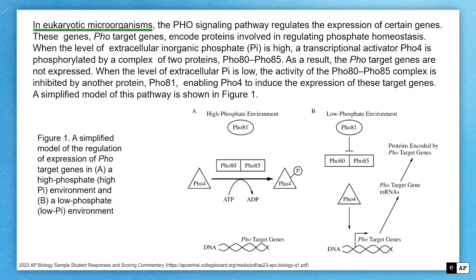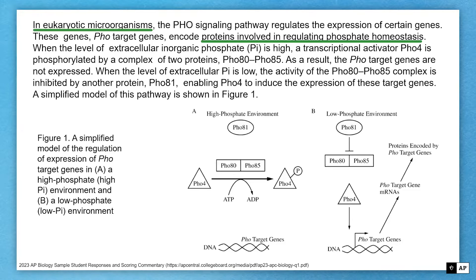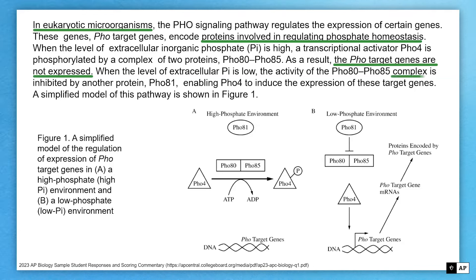In eukaryotic microorganisms, the PHO signaling pathway regulates the expression of certain genes. These genes, the PHO target genes, encode proteins involved in regulating phosphate homeostasis. When the level of extracellular inorganic phosphate is high, the transcriptional activator PHO4 is phosphorylated by a complex of two proteins, PHO80 and PHO85. As a result, the PHO target genes are not expressed. When the level of extracellular phosphate is low, the activity of the PHO80 and PHO85 complex is inhibited by another protein, PHO81, which enables PHO4 to induce the expression of these target genes.